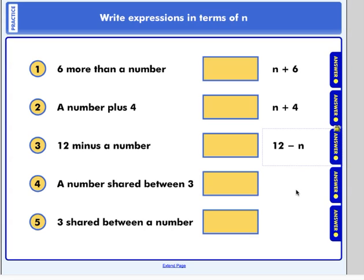Number four. A number shared between three and divided by three. Now, you could have written it out, n divided by three. It doesn't matter which way you wrote it, as long as it means n divided by three. It cannot be three divided by n, because remember, order matters when we're talking about division.